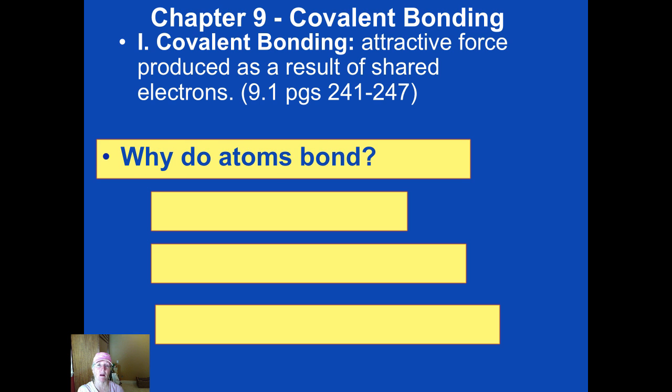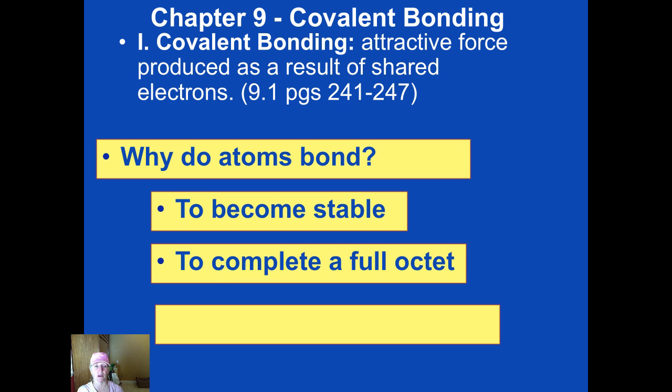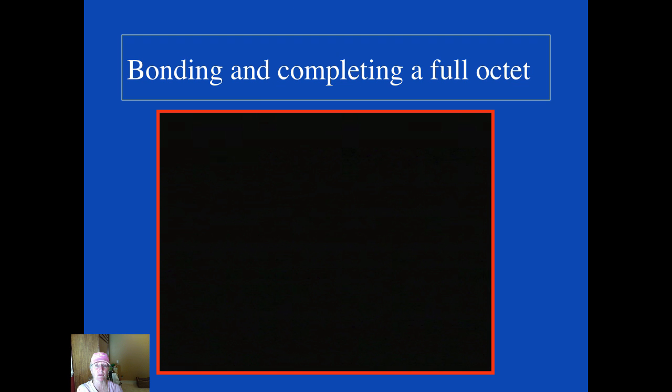Now why do atoms bond at all whether ionic or covalent? Well the first and most important reason is that they become stable. If you have seven outermost electrons and can share with another atom, you've gotten a full octet, eight outermost electrons, then you have become isoelectronic with the nearest noble gas. The exception to that is hydrogen. Hydrogen when it shares electrons can only have two electrons maximum, not eight. So stability is the key.